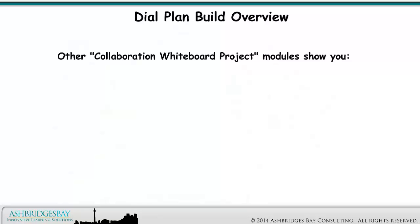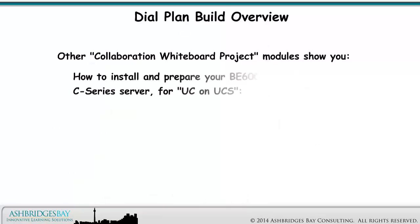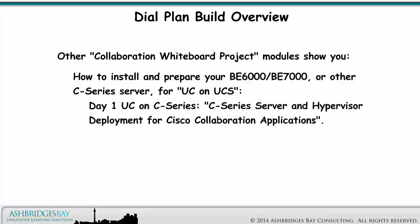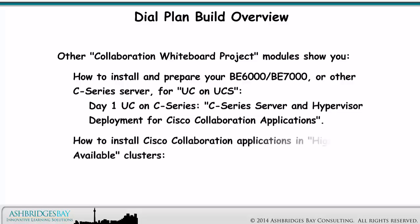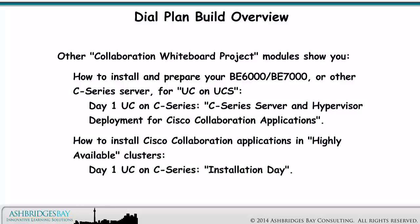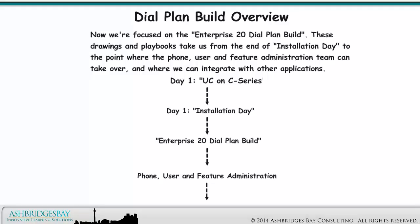Other collaboration whiteboard project modules show you how to install and prepare your BE6000, BE7000, or other C-Series server for UC on UCS. Day 1 UC on C-Series: C-Series server and hypervisor deployment for Cisco collaboration applications. And how to install Cisco collaboration applications in highly available clusters. Day 1 UC on C-Series, installation day. Now we're focused on the Enterprise 20 dial plan build. These drawings and playbooks take us from the end of installation day to the point where the phone, user, and feature administration team can take over, and where we can integrate with other applications.